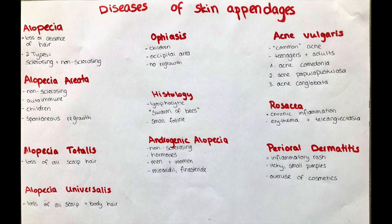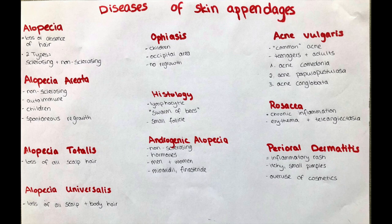So far so good for the alopecias. Let's continue now with the diseases of the pilosebaceous unit. You might ask yourself what exactly the pilosebaceous unit contains — it comprises the hair shaft, the hair follicle, the sebaceous gland, and the erector pili muscle. This unit is found in every area of the body that contains hair. In this section we will talk about acne vulgaris, rosacea, and perioral dermatitis.